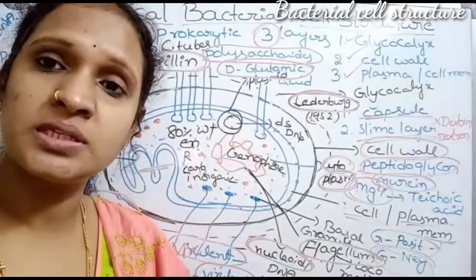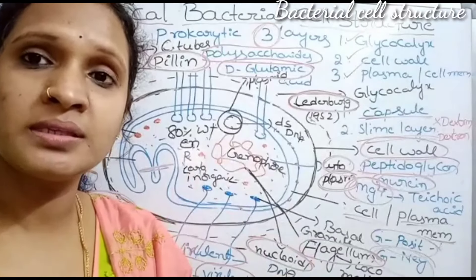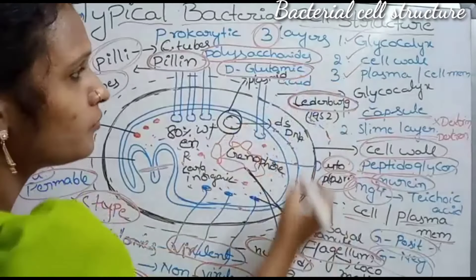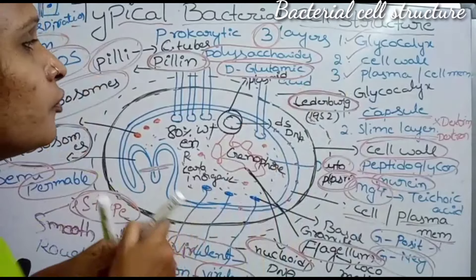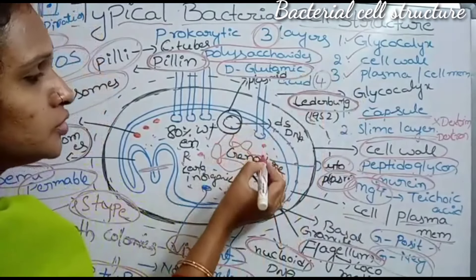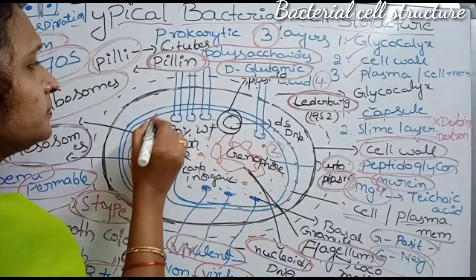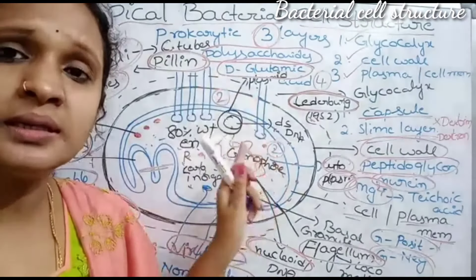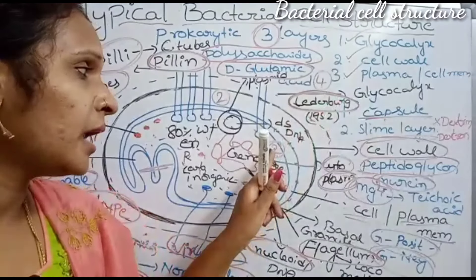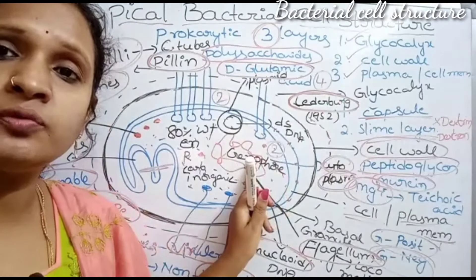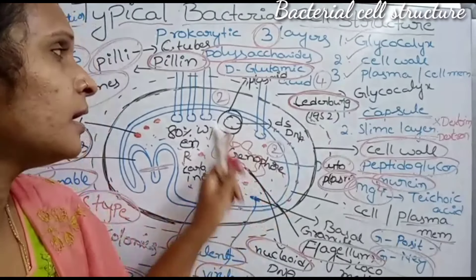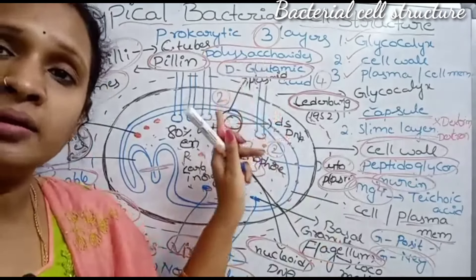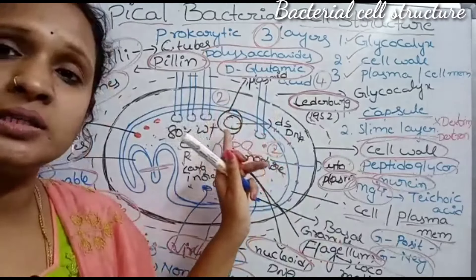This topic has important exam questions. For intermediate secondary students, bacterial cell structure is a four-mark question. Genophore is a two-mark question. Plasmid is a two-mark question — total eight marks in this topic. For degree first-semester students, bacterial cell structure with functions and diagram is a ten-mark question.